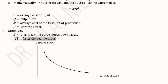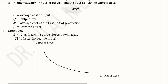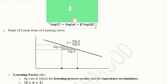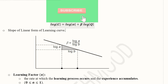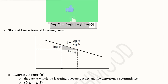A greater absolute value of beta means a greater slope, which means a quicker decline in average cost. We can see this by logarithmically linearizing the learning effect equation. Taking the log of C = α · Q^β gives: log C = log α + β · log Q. Now beta is explicitly showing the slope of the learning curve in linear form. This slope beta can be calculated as the ratio of rise over run, that is log(a) divided by log(b), where a and b are the learning factor and output proportionality factor respectively.